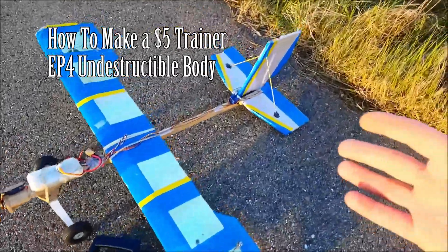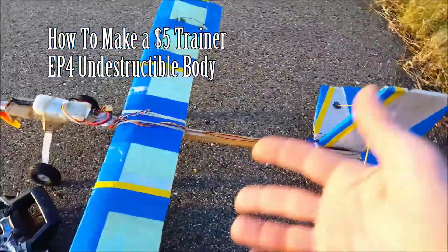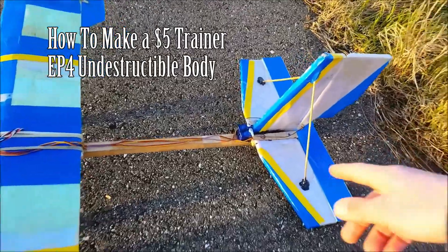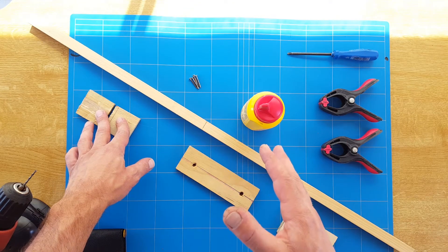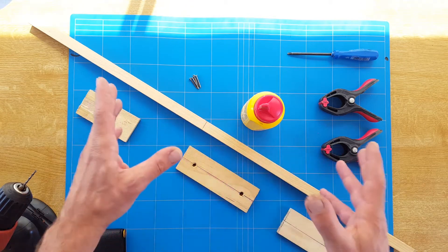Hello everybody and thank you all for watching again. How to make an indestructible five-dollar trainer plane, Episode number four, where we're going to be building the body and the motor mount slash firewall. Step one are the supplies that you're going to be needing.